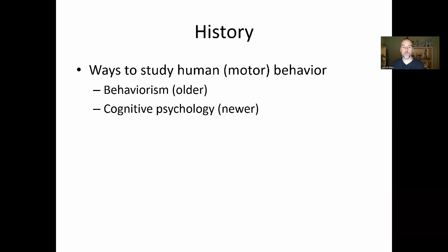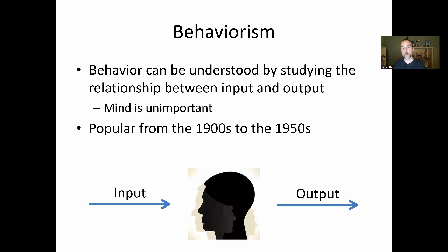So what is cognitive psychology and how did we get there? Before cognitive psychology came behaviorism. Within the framework of behaviorism — and researchers within this perspective still exist today and it's still valid — the perspective was that we're going to try to understand human behavior by looking at the input and the output. The mind was unimportant; behaviorists treat the mind as a black box. Behaviorism isn't as popular now as it once was; its reign was really the 1900s to the 1950s.